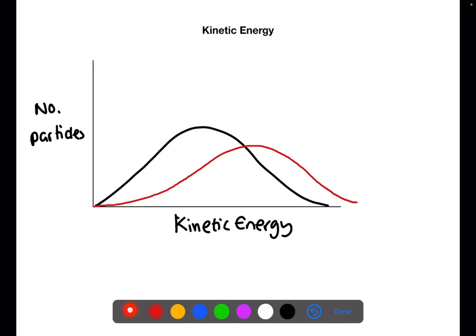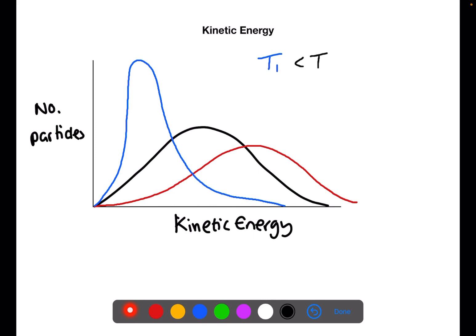If we cool it down, the average kinetic energy decreases, so the peak of the curve moves to the left and higher up. So here we have T1 which is less than T2 which is less than T3.